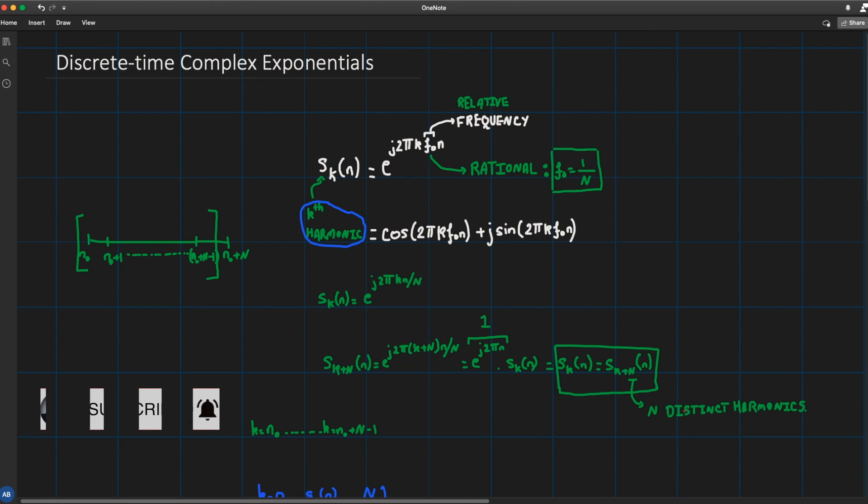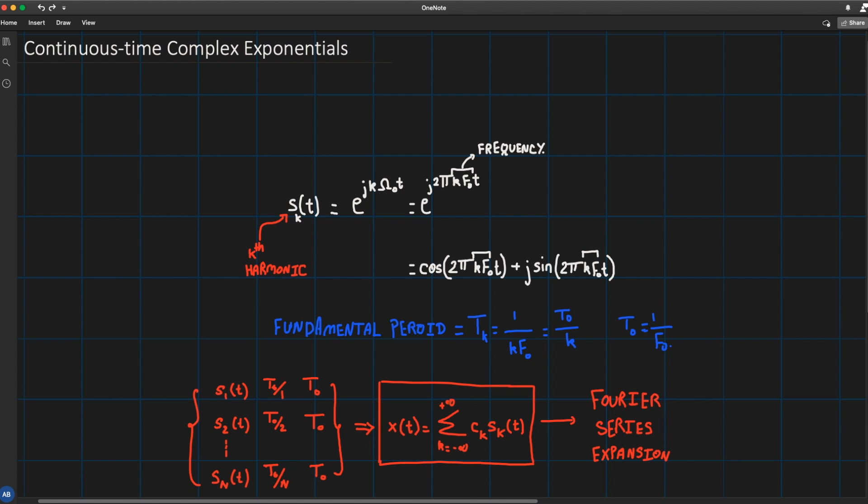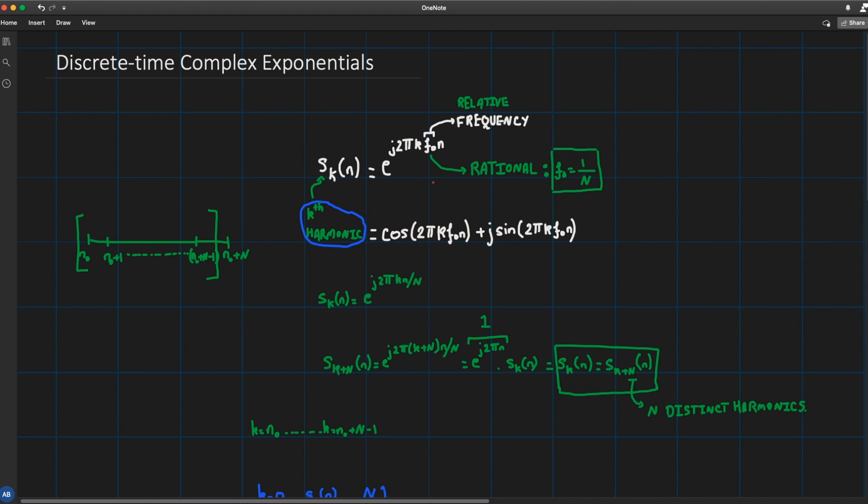in the discrete case we have a finite amount of harmonics. So in the continuous time we had an infinite number of harmonics because they're all essentially distinct. However in the discrete time case once the relative frequency is a rational number and hence my exponentials are periodic, then we have a distinct number of harmonics.